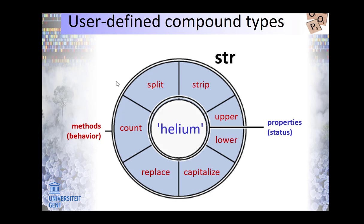In previous exercises we used objects from the String class. Each object in this class has certain properties — for example the name Helium, which reflects the status — and a number of methods. Objects are created as instances of a class. Each object of a particular data type shares the class's methods, but each object has its own value of the properties. A String with the name Argon, for example, has a different value for the same property, is in a different status, but can perform the same methods.